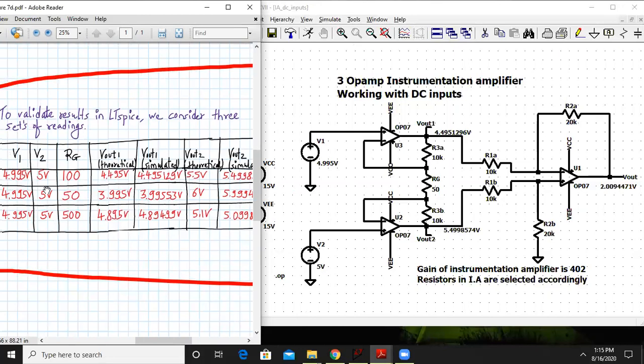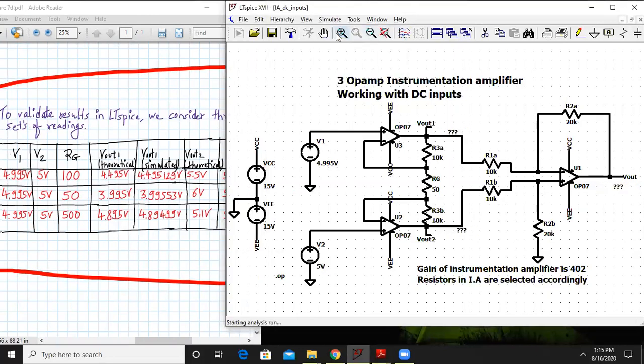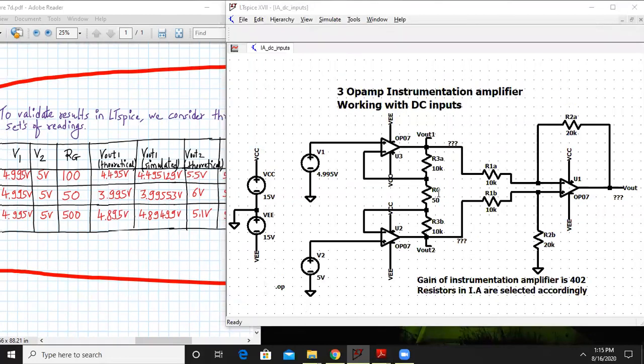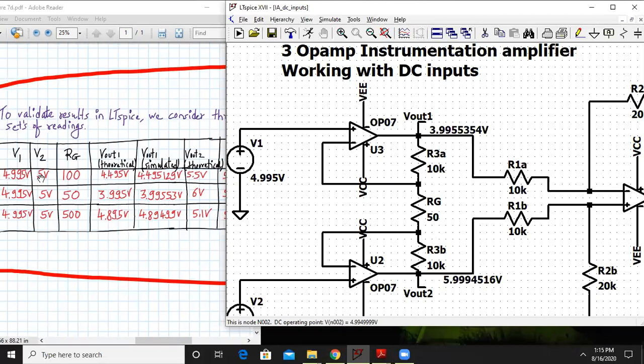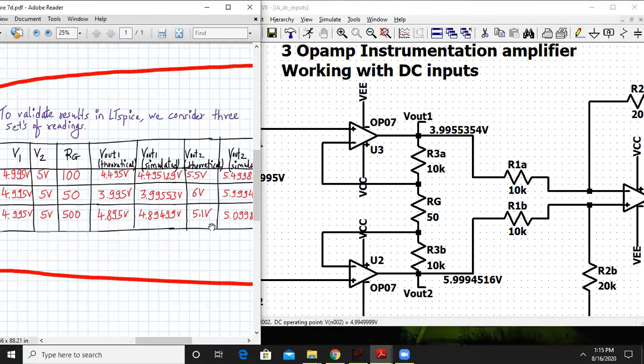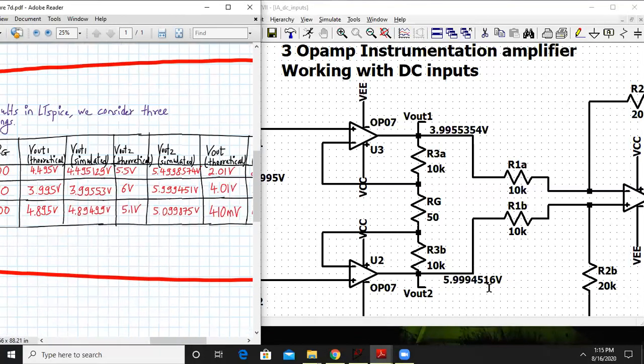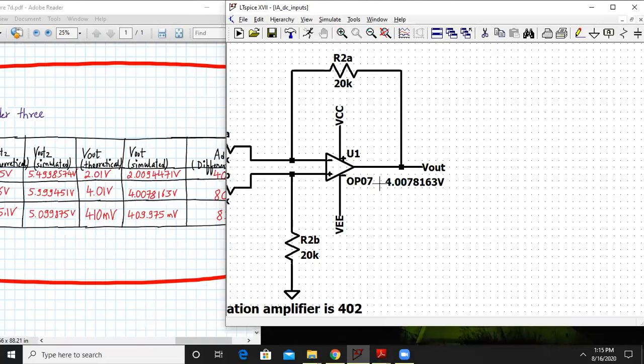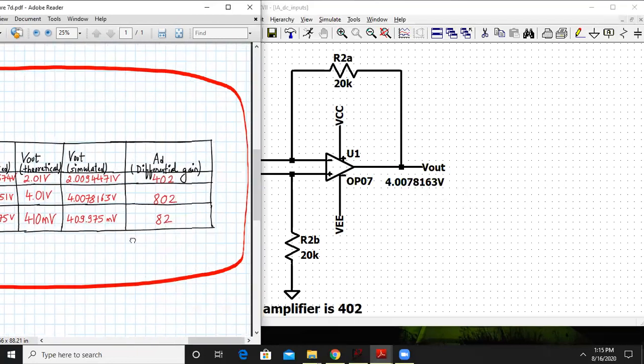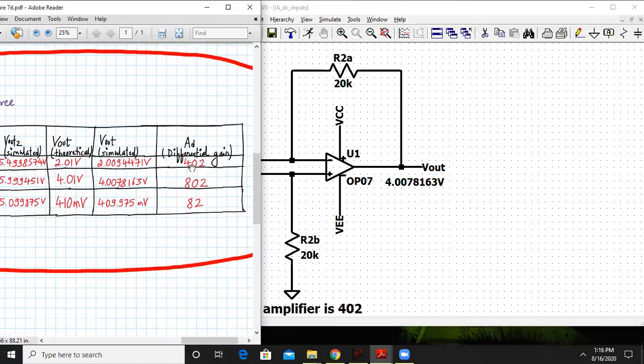If we simulate this we got Vout1 as 3.995, Vout2 is 5.999, close to the theoretical value, and the output is 4.007 while theoretical value is 4.01. So it's quite close and just by changing RG you got very high gain which is not possible in normal differential amplifier. Hence instrumentation amplifier is extremely important.